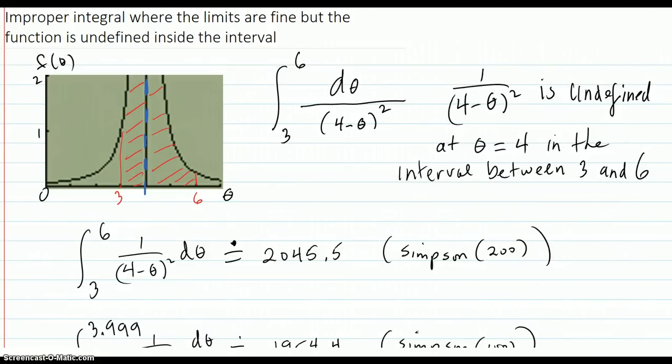Here's an improper integral where the limits are perfectly fine, but the function is undefined inside the interval. So here is your integral right here. And you see that the integrand, 1 over 4 minus theta squared, is undefined at theta equals 4, which is between 3 and 6. So there's nothing wrong with 3 and 6,